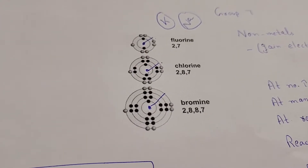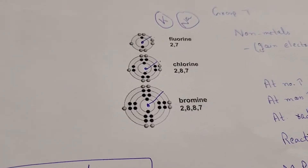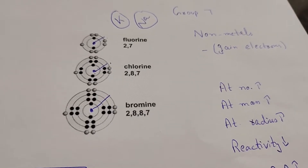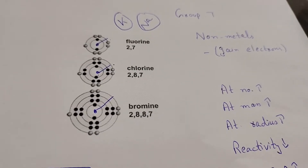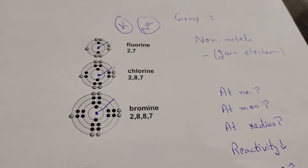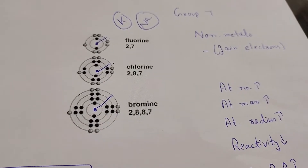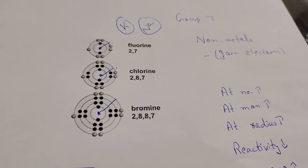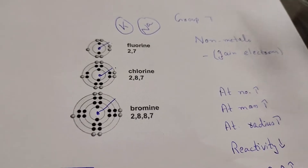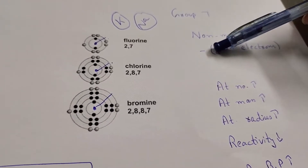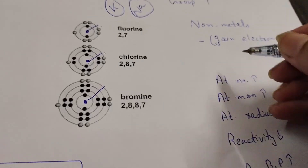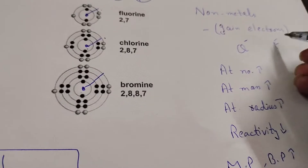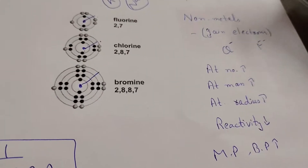Reactivity in group seven decreases as we move downwards. Group seven elements are non-metals and already have seven electrons in their outermost shell. For stability they need only one more electron, so they tend to gain an electron. When an element gains an electron it will have a negative charge — for example, chlorine and fluorine will each have a negative charge.